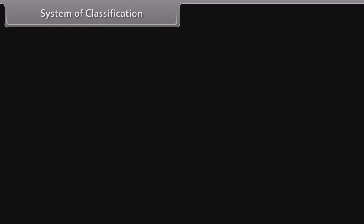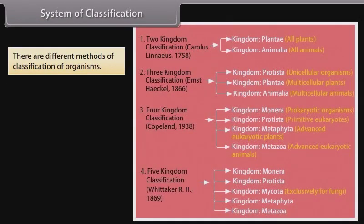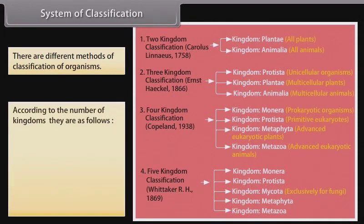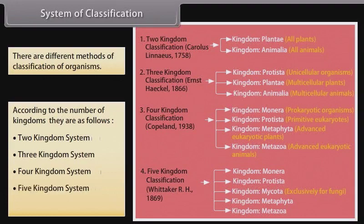There are different methods of classification of organisms. According to the number of kingdoms, they are: two kingdom system, three kingdom system, four kingdom system, five kingdom system, and six kingdom system.